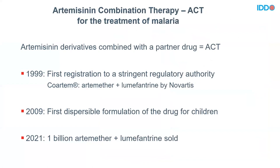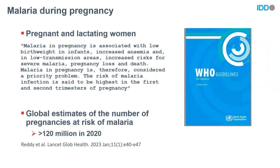The treatment of malaria is artemisinin combination therapy. The first drug of the ACT which was registered was in 1999. The first dispersible formulation of the drug was done 10 years ago. And in 2021, about 1 billion artemether-lumefantrine — which is the main ACT currently on the market, representing probably 70% of what is sold — has been used. That's a lot of treatment in the space of about 20 years. Now, taking the example of a pregnant woman, WHO highlights that this is a group who is particularly at risk of treatment failure or severe disease.